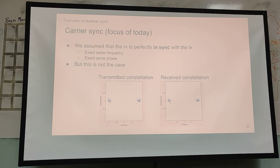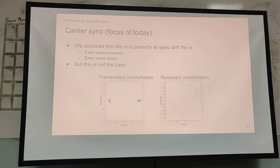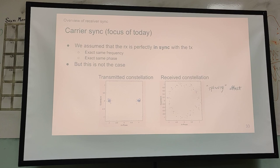In module two, we assumed that the received constellation looks basically the same as the transmitted constellation, if not just for some added noise. But in fact, if you try to implement this demodulation scheme in real life, your received constellation will actually look something like a spinning effect. This spinning effect is because the frequency and phase of the carrier on the receiver side is different than that of the transmitter side. This is called carrier synchronization, and we'll be focusing on how to fix that later in this lecture.